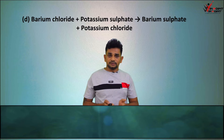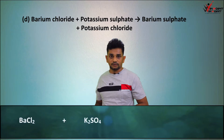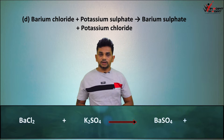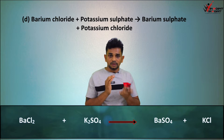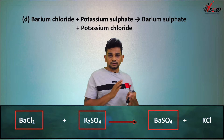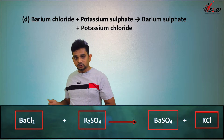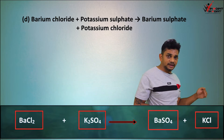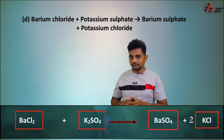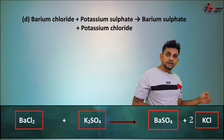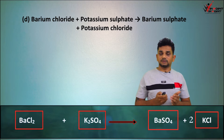Barium chloride + potassium sulfate → barium sulfate + potassium chloride: BaCl2 + K2SO4 → BaSO4 + KCl. Count SO4: K2SO4 has 1 SO4, BaSO4 has 1 SO4 — balanced. Chlorine: BaCl2 has 2 chlorine, KCl has 1 chlorine, so we add a 2 to KCl. Now 2 KCl has 2 chlorine — balanced. Potassium: K2SO4 has 2 potassium, 2 KCl has 2 potassium — balanced. The balanced equation is BaCl2 + K2SO4 → BaSO4 + 2 KCl.